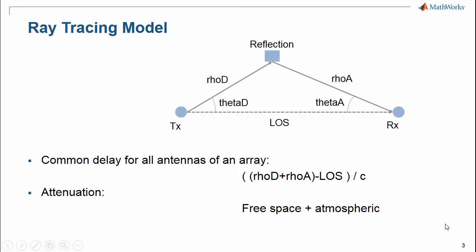Let's have a look at the channel model. We model N scatterers, or reflectors. We associate each path with a delay and attenuation. The delay is normalized by the line of sight distance. The attenuation is due to free space propagation as well as atmospheric absorption.